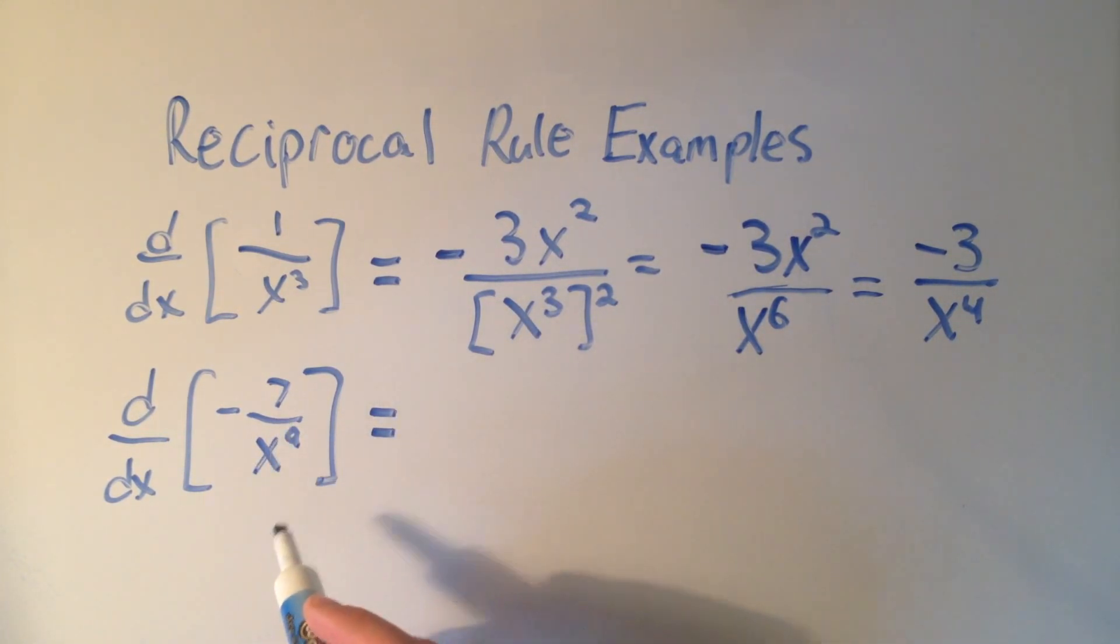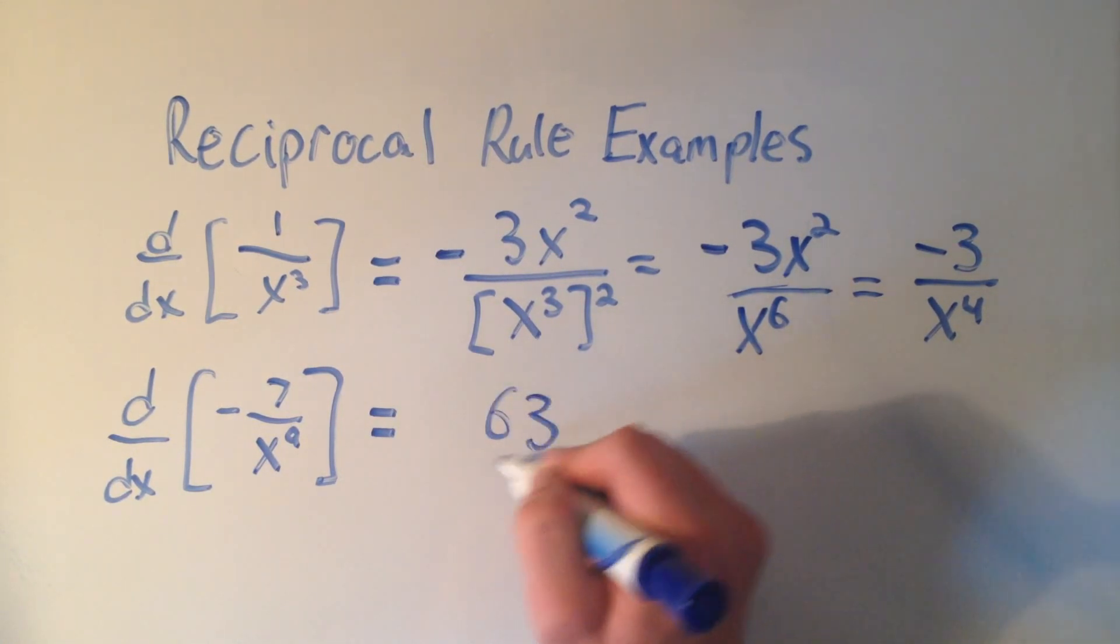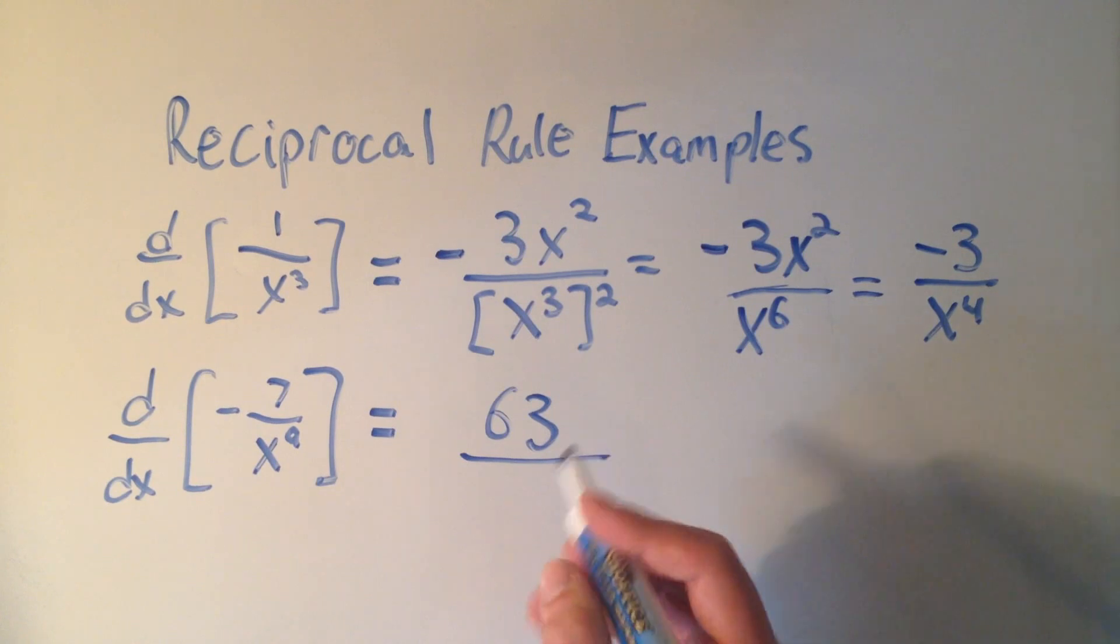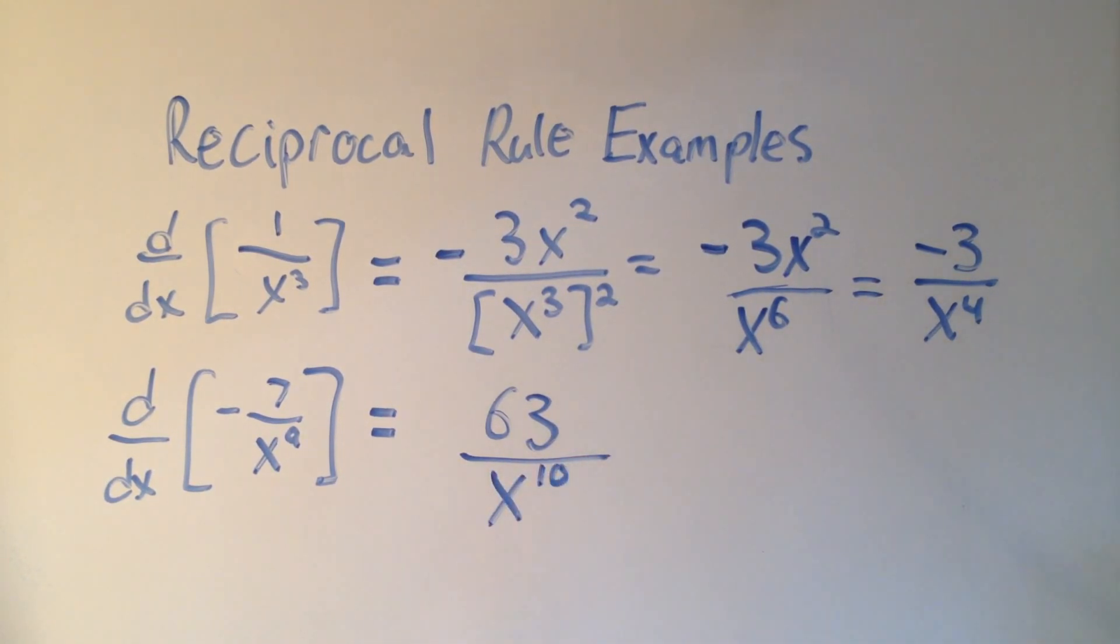if I do this problem, I flip this sign, so I'm going to make this positive, I multiply by the power in the denominator, so 7 times 9 is 63, and then I add 1 to the power of the denominator. So that's an even shorter way to use the reciprocal rule.